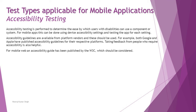Taking feedback from people who require accessibility is also useful to add more value. For mobile web, an accessibility guide has been published by W3C — the World Wide Web Consortium — which should also be considered if you are making a hybrid app or browser-based app. Putting it all together, including parts one, two, and three, these are the different common test types that should be conducted for a mobile app to ensure they meet expectations and fulfill the needs of the user.